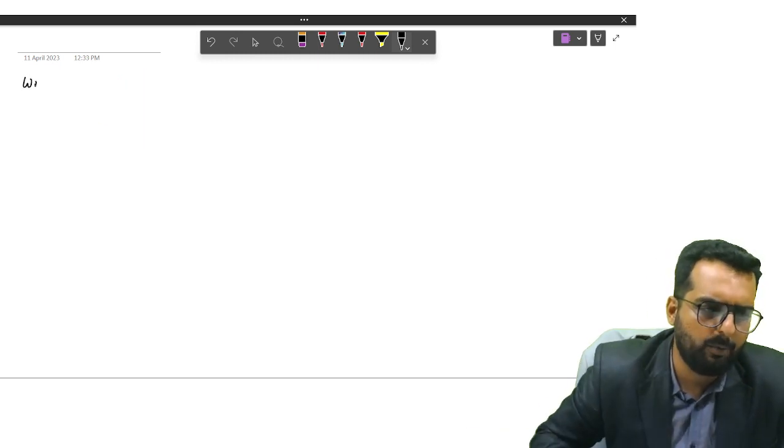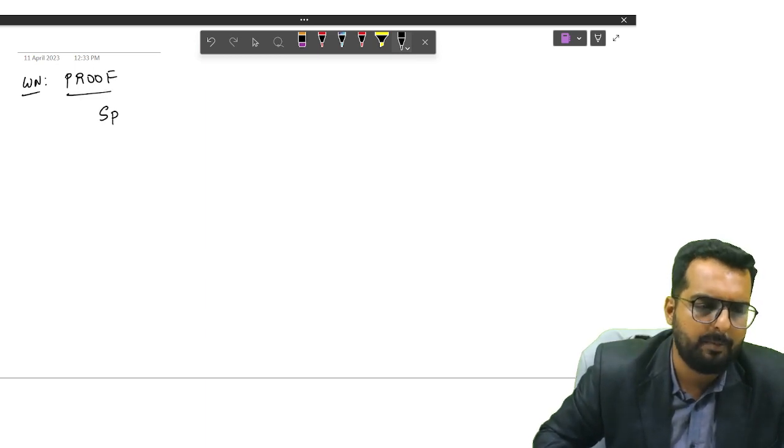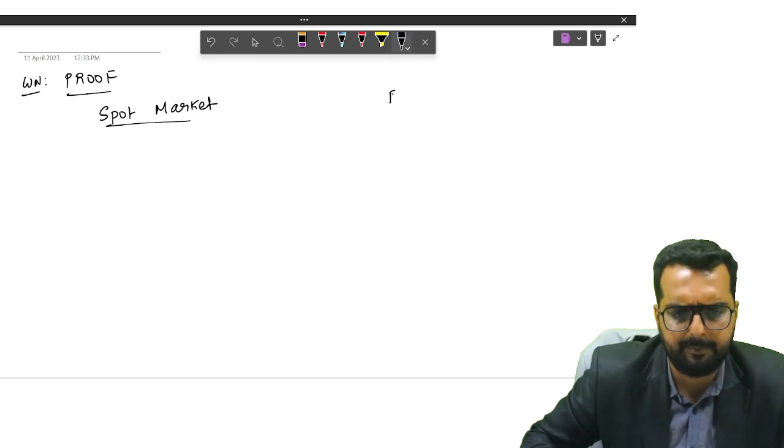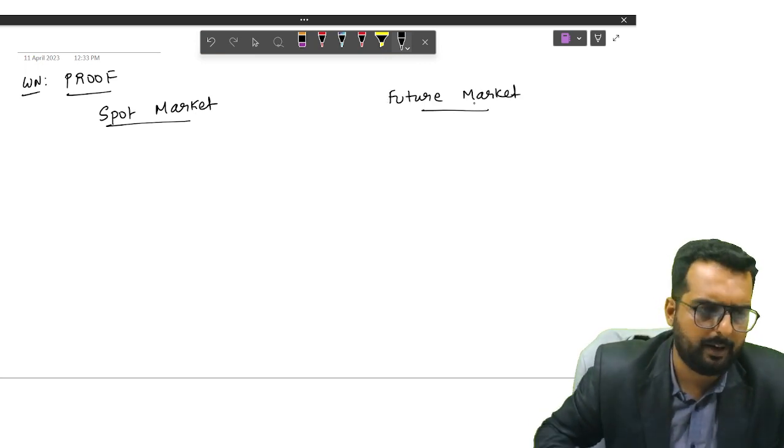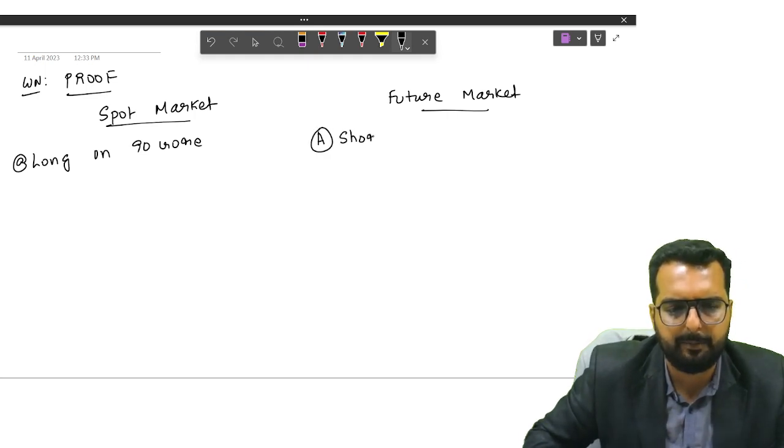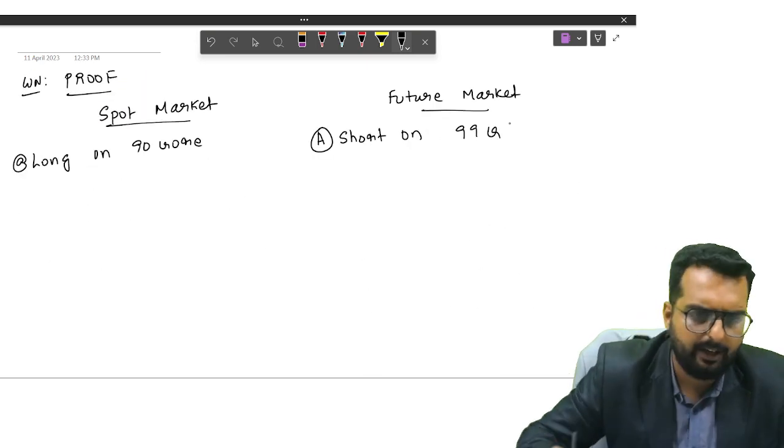Once we get this, they need the proof now. So, I will write down the next heading: Proof. There are two markets. What are the two markets? Spot market and the other one is the future market. In the spot market, what am I doing? I am long on 90 crore. In the future market, I am going short on 99 crore.